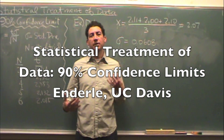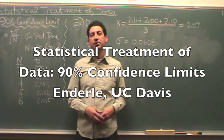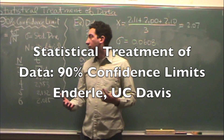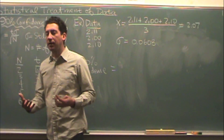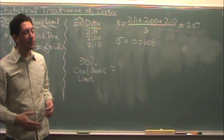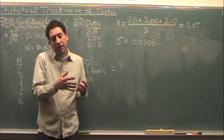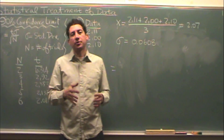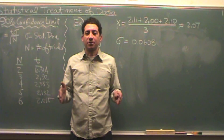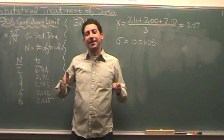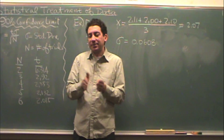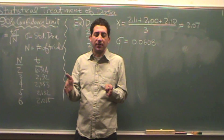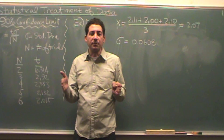For statistical treatment of data, we're going to look at the 90% confidence limit. The 90% confidence limit means that for the value you calculate, you're going to be 90% sure that your data is within that value from the mean.